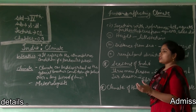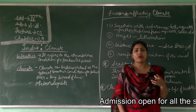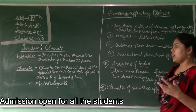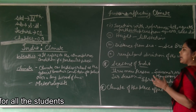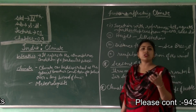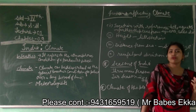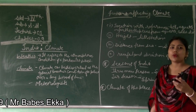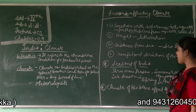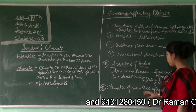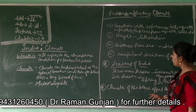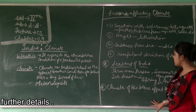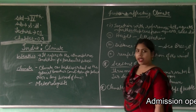Climate determines the types of clothes that we wear, the types of food that we eat, and the types of crops grown in the area. So climate affects our life as well. In the next part of this chapter, we will see about the seasons of India. Thank you.